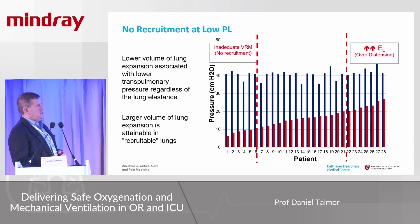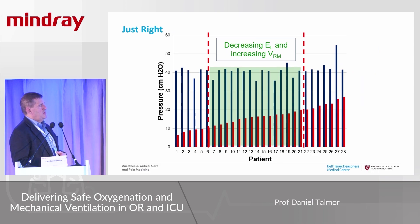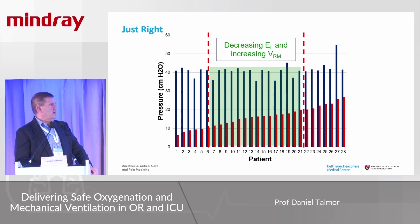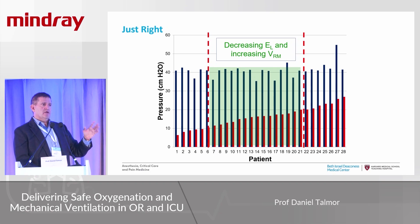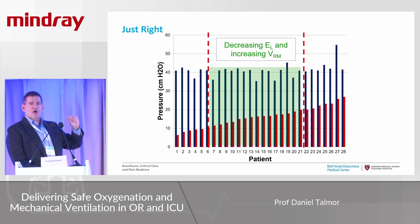Patients with low transpulmonary pressure had no volume of recruitment. Low is no good — you don't recruit anything. High is no good either. We need to target a golden zone in the middle where you decrease elastance, improve the lung, and increase the volume of recruitment. Targeting transpulmonary pressure during a recruitment maneuver may be a much better strategy than using an arbitrary level of airway pressure.